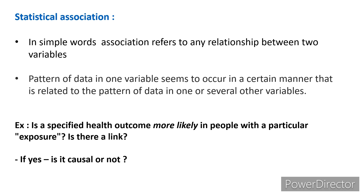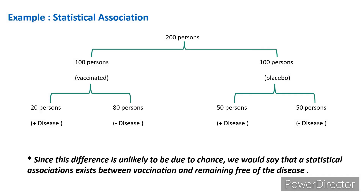Using the example of smoking and cancer: is cancer more likely in people who smoke, and if there is any association, is it causal or not? Consider 200 people divided into two groups — a treatment group and a control group. One hundred persons in the treatment group are given vaccination for a particular disease, and the other 100 persons in the control group are given a placebo, which is an inactive substance. Among the vaccinated, 20 persons develop disease and 80 are free from disease.